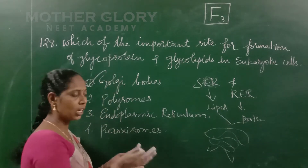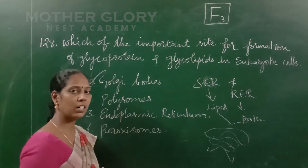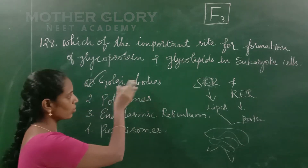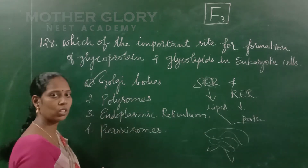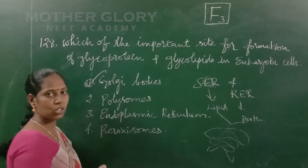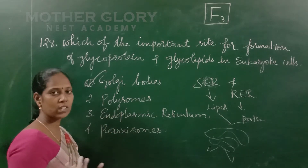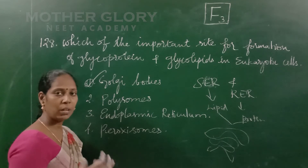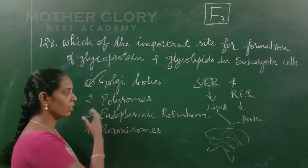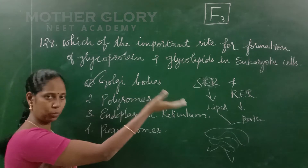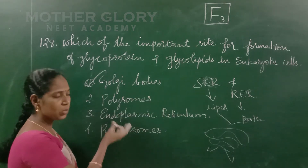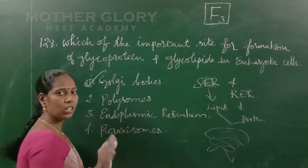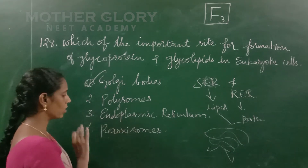So, the glycoproteins and glycolipids are formed. The correct answer involves different types of ribosomes — many ribosomes, like mRNA, are very ribosomes. This is a protein synthesis process. The question is: how can a protein be formed, like glycoprotein and glycolipids? So, this is the answer.